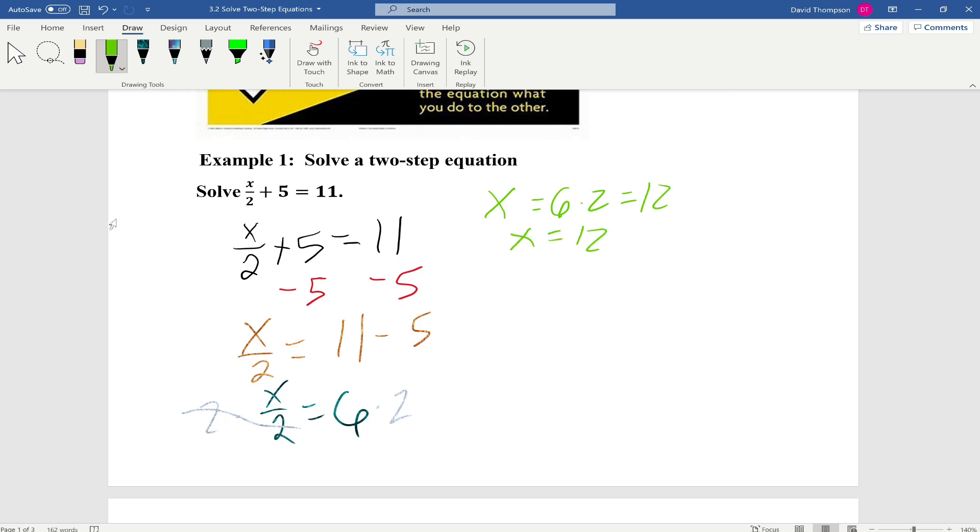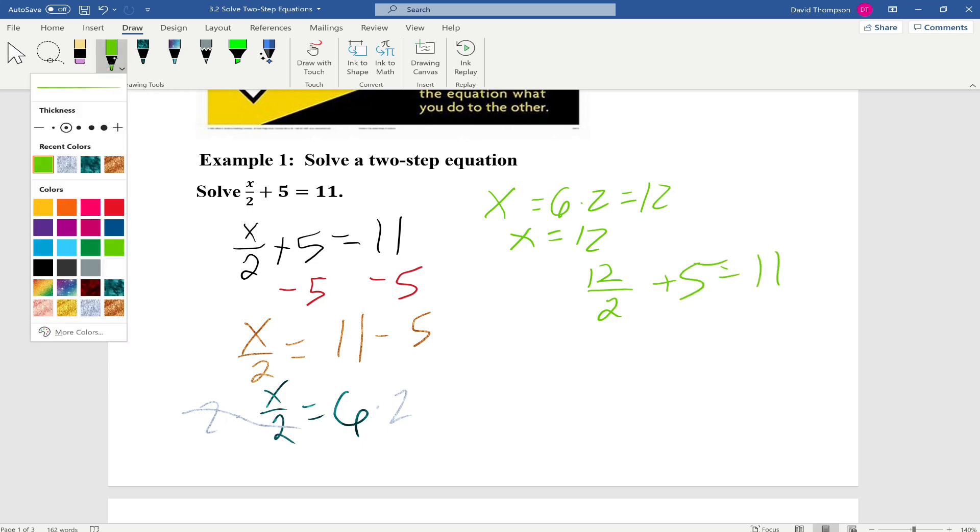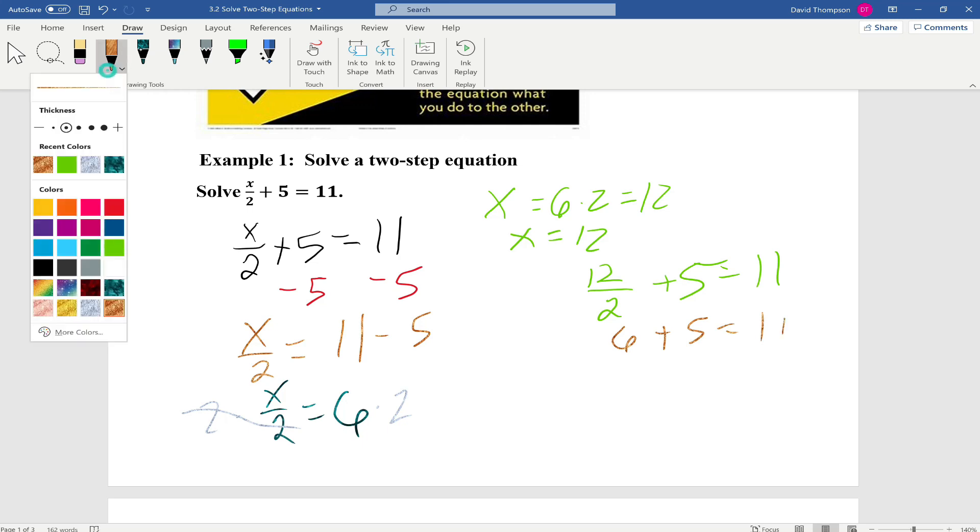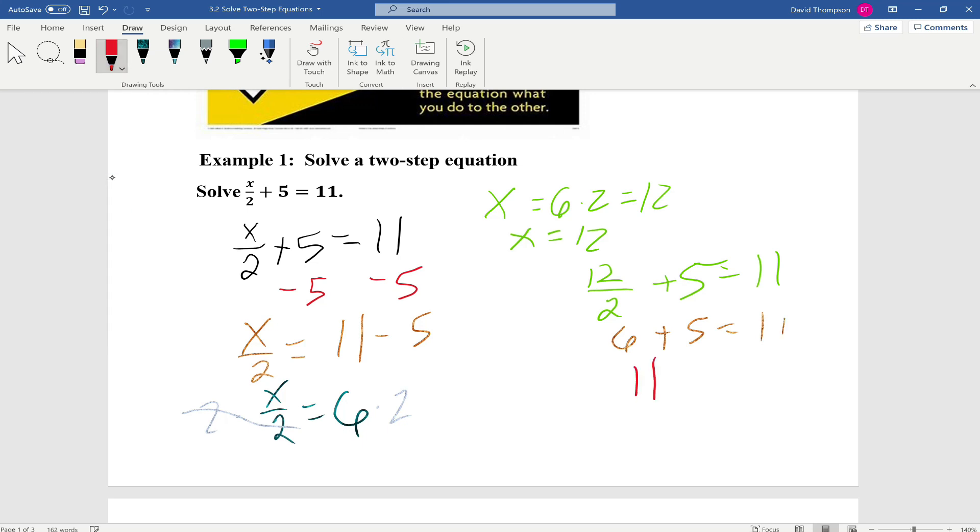And recall, we can double-check by plugging into our original equation. So we're going to do 12 divided by 2 plus 5 equals 11. 12 divided by 2 happens to be 6 plus 5 equals 11. And 6 plus 5 equals 11. So it checks out, and our solution is x equals 12. And we are done.